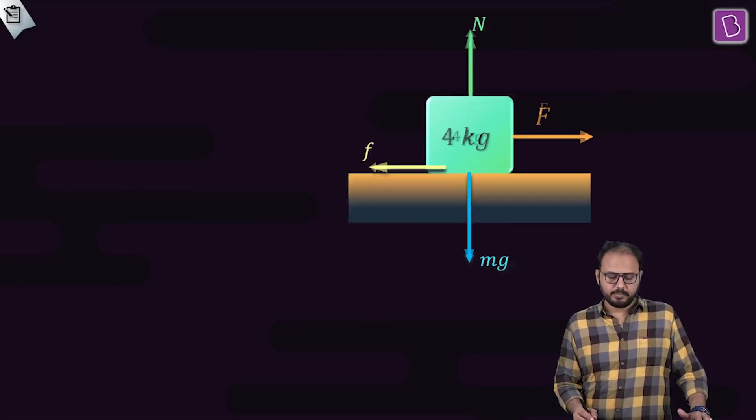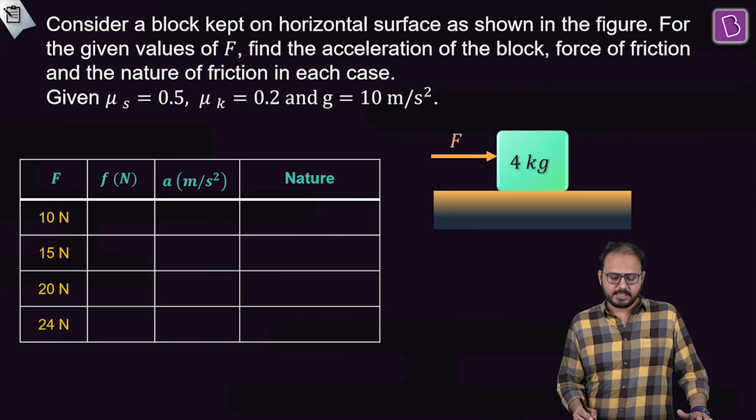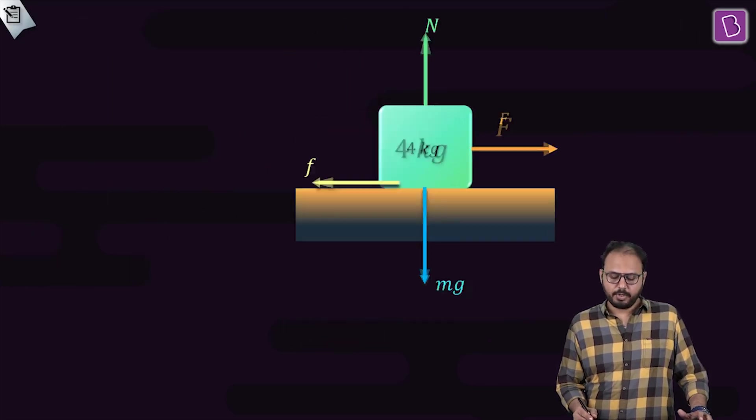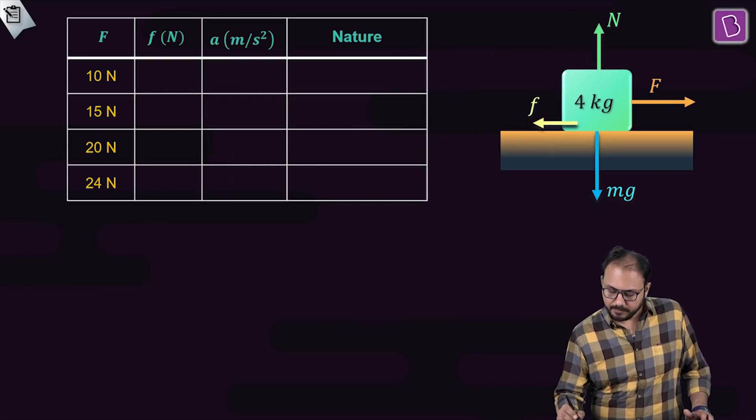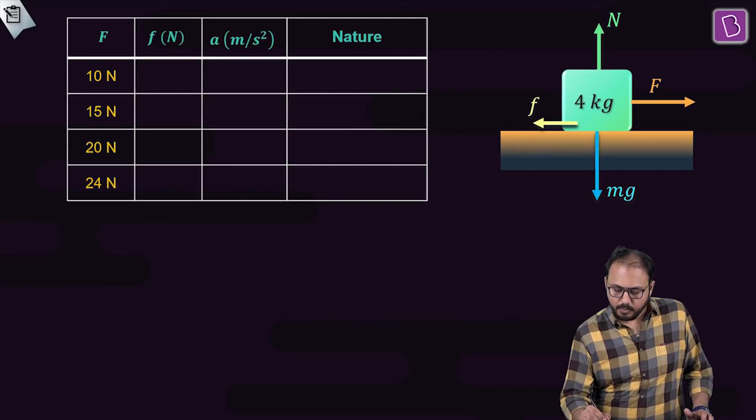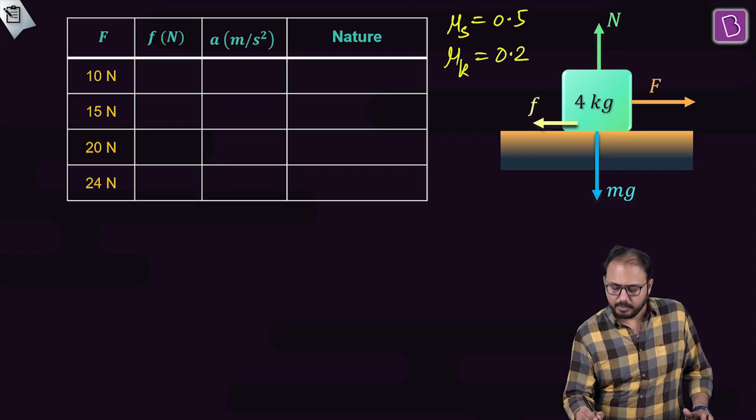What is μs value? μs value is 0.5, μk value is 0.2. So for your reference, μs value is 0.5, and μk value is 0.2.